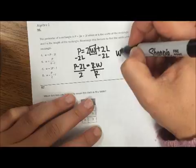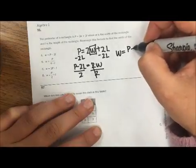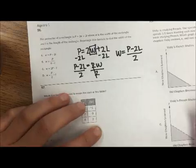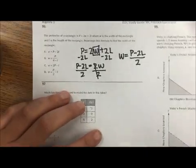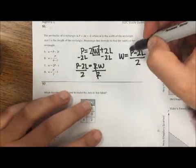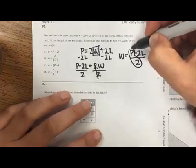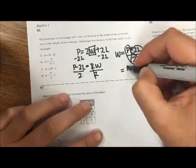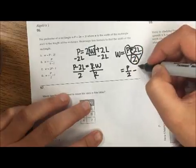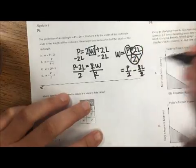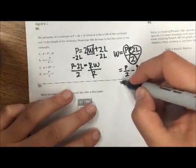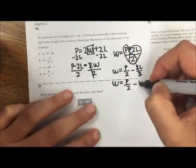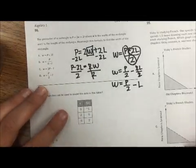So I'm left with W equals P minus 2L, all divided by 2. So in order to simplify this, I'm going to create two fractions. So that's P over 2 minus 2L over 2. And those two simplify, so I'm left with P divided by 2 minus L. So that would be option D.